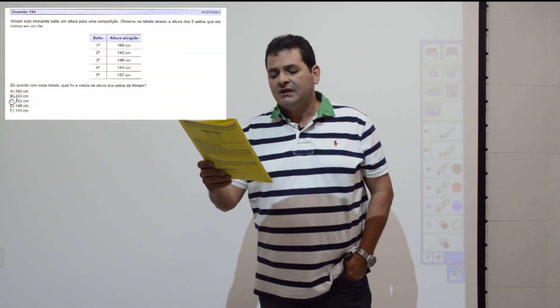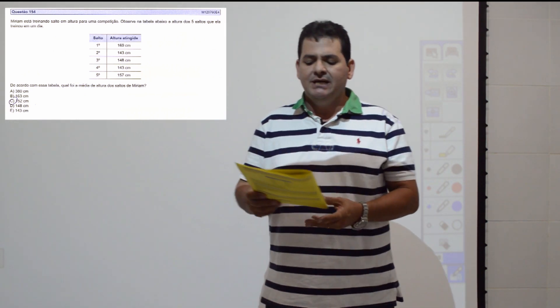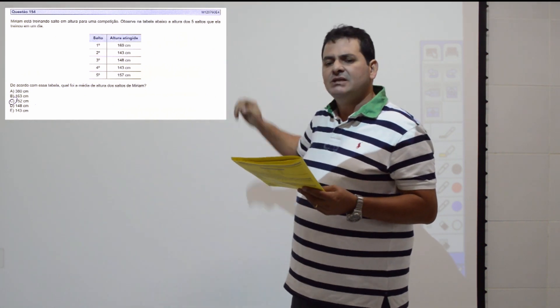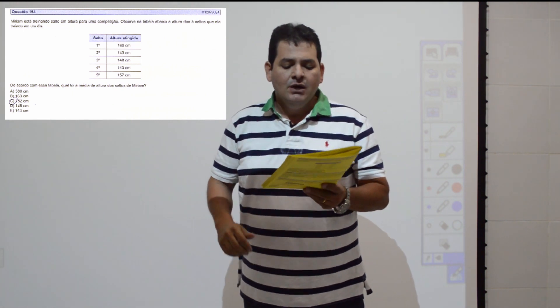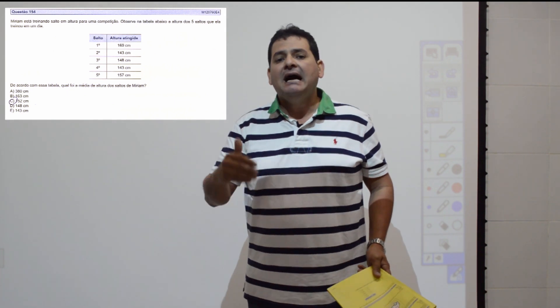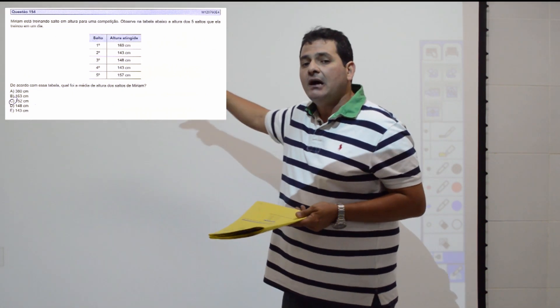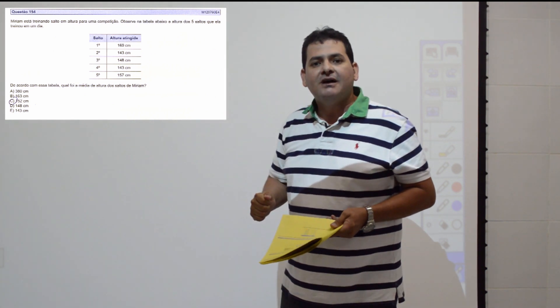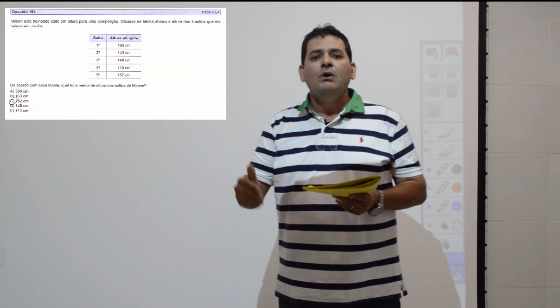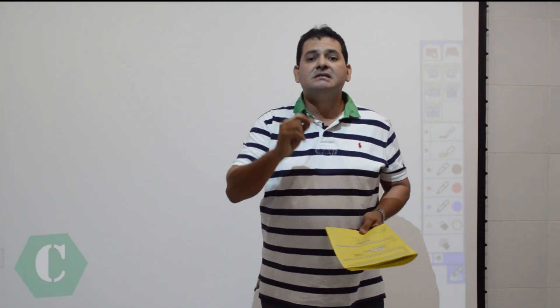Questão 154: Miriam realizou 5 saltos em altura. Para calcular a média aritmética simples das alturas, faço o somatório das medidas dos saltos e divido por 5. O resultado é 152 centímetros. Item C.